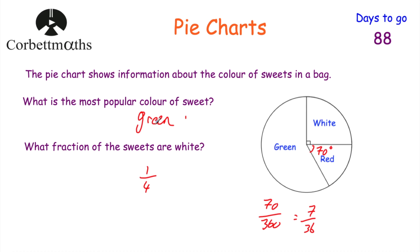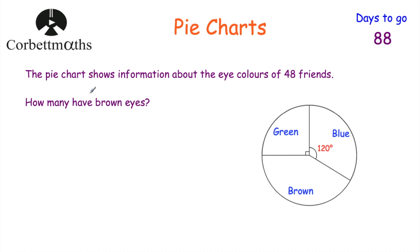Hopefully you got those two questions right — green and a quarter. Now our next question: the pie chart shows information about the eye color of 48 friends. We're asked how many of them have brown eyes. We've got green, blue and brown in the pie chart. Feel free to pause the video and try the question.